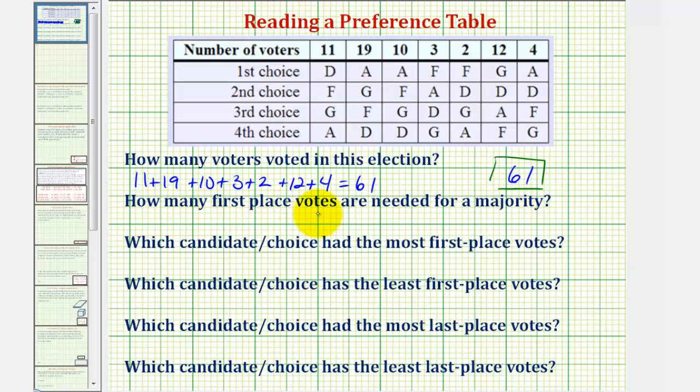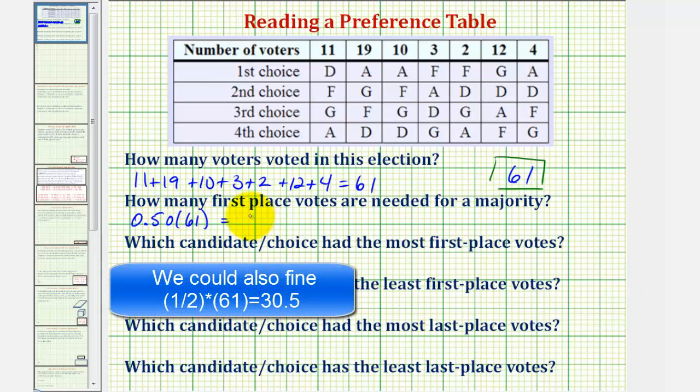Next we're asked how many first place votes are needed for a majority? A majority is more than half, so we want to begin by finding half, or 50% of 61. To find 50% of 61, we would convert 50% to a decimal, which is 0.5, or 0.50, then multiply by 61. This would give us 30.5.